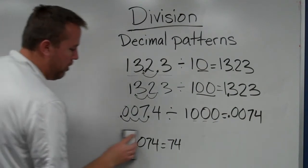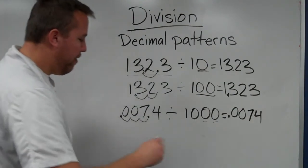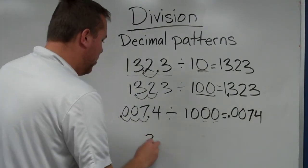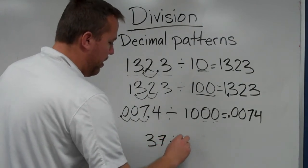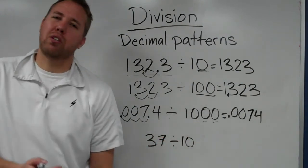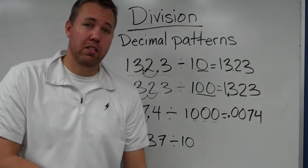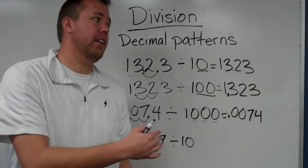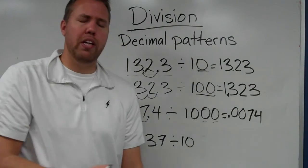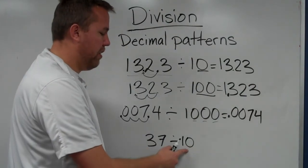Last thing I want to show you is, if we have a whole number, 37 divided by ten. Sure, we can do it long division, three remainder seven, three and seven tenths. We can do it that way, but ten's our friend.